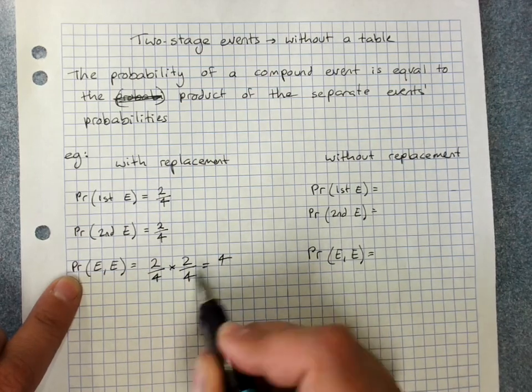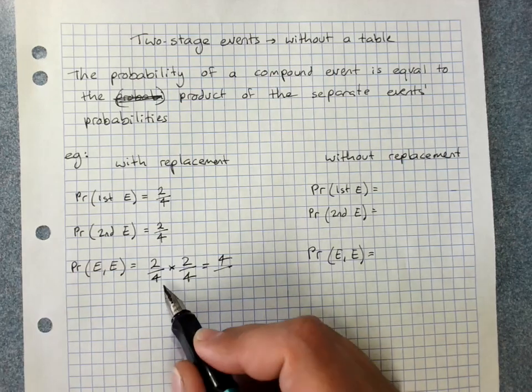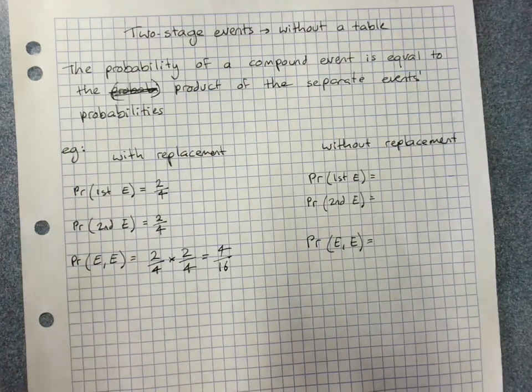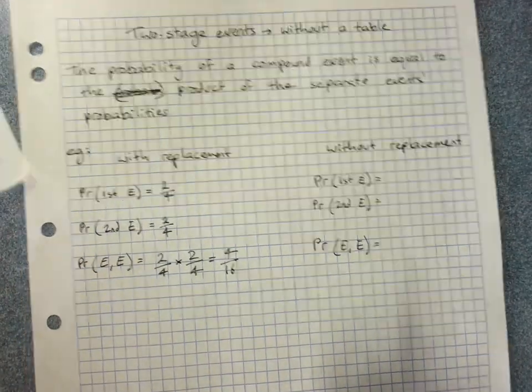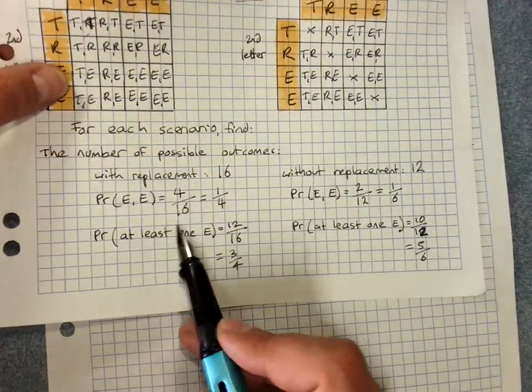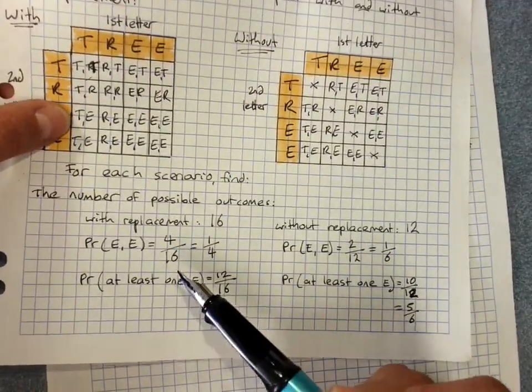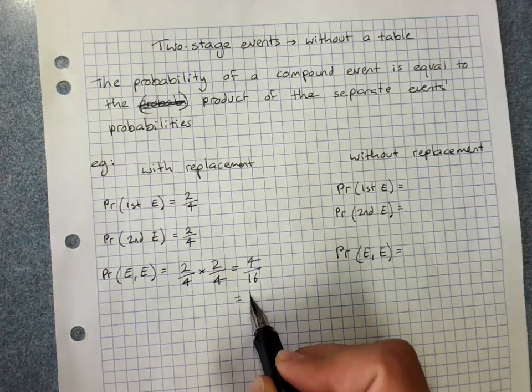Probability of getting the first E and then the second E is 2 over 4 times 2 over 4. 2 times 2 is 4, 4 times 4 is 16, which is exactly the probability that we got when we counted up the outcomes. And that simplifies to 1 over 4.